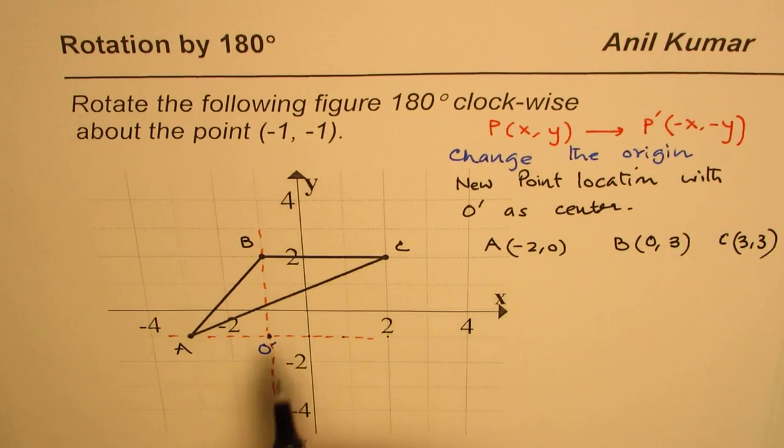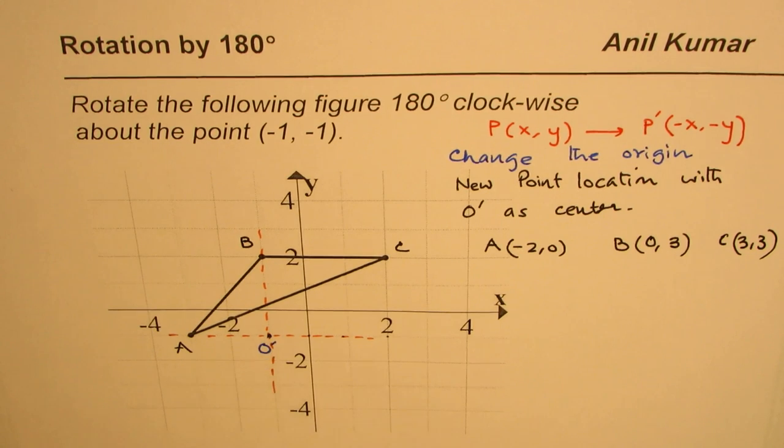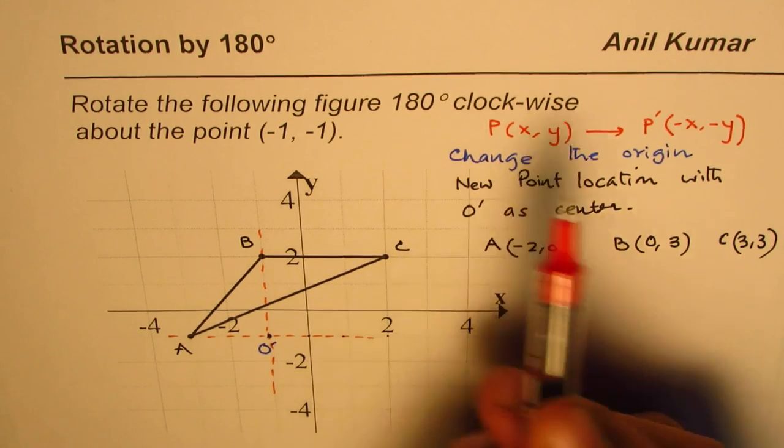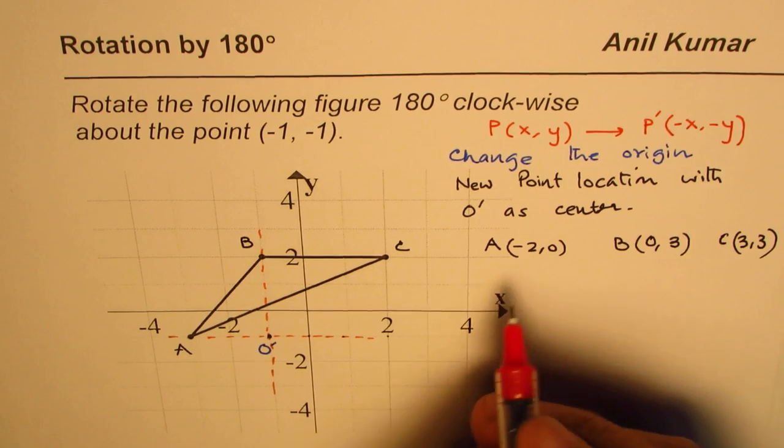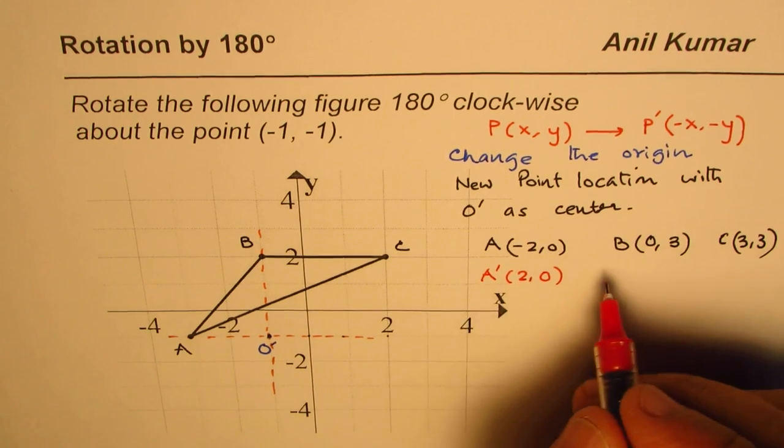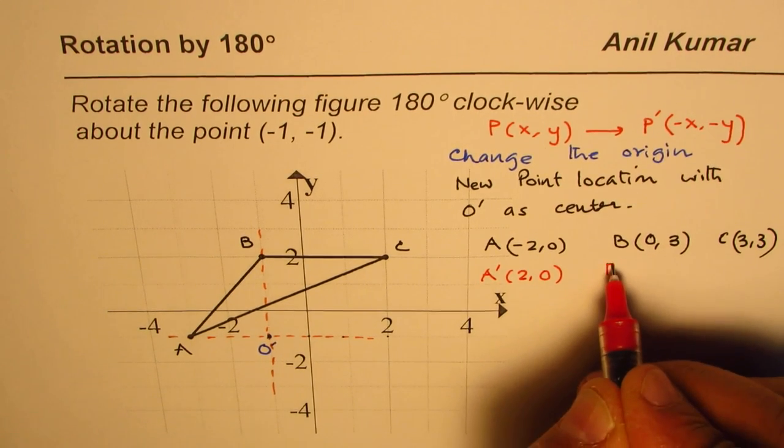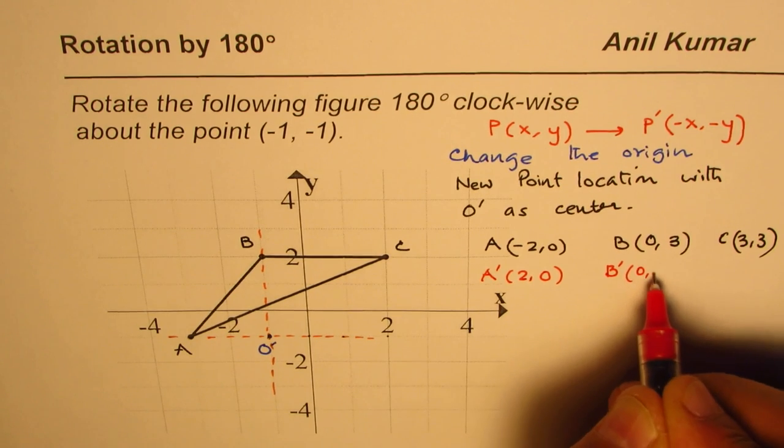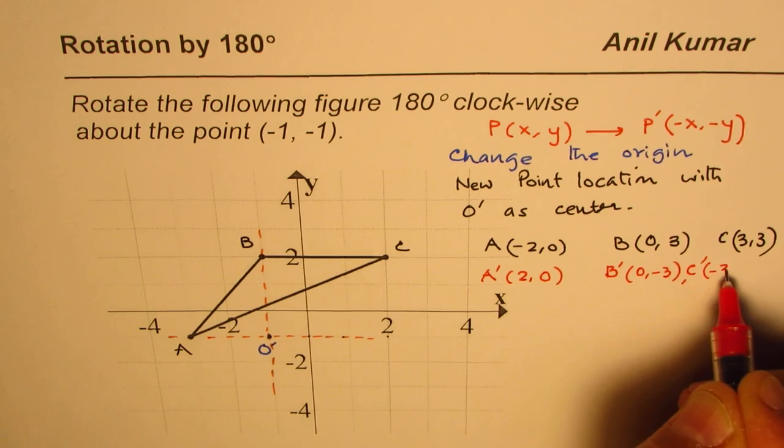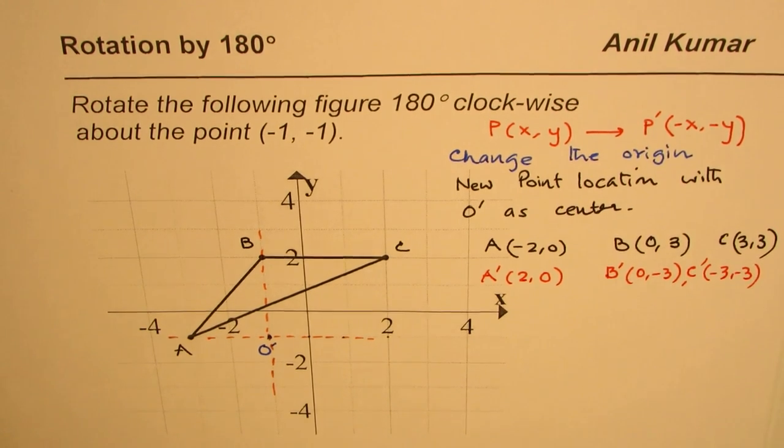are the new coordinate points with reference to the new origin. Now, after 180 degrees rotation, these signs will change. So A' is (2, 0)—the sign of 0 is the same. B' will be (0, -3), and C' will be (-3, -3). That is